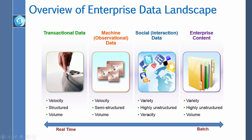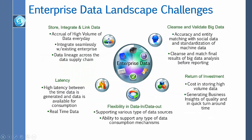There are four types of data: transactional data, observational data, social interaction data, and enterprise content data. Some data are processed real-time, and some data are processed in batches.